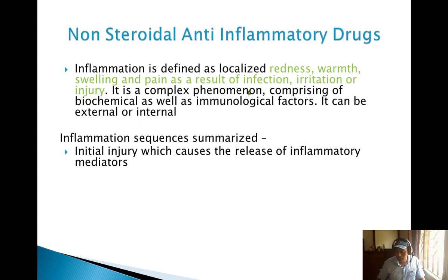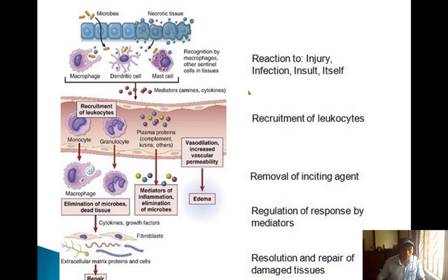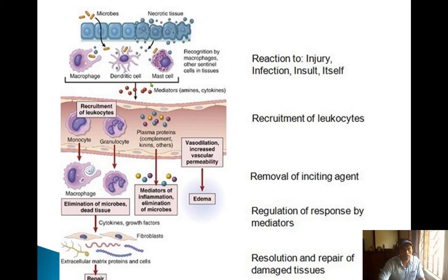What happens in inflammation: initially an injury occurs, causing release of inflammatory mediators — the factors which cause inflammation. Looking at this diagram, here is your skin with its upper layer. A microbe, such as bacteria or a virus, enters because of injury or rupture of the top layer.